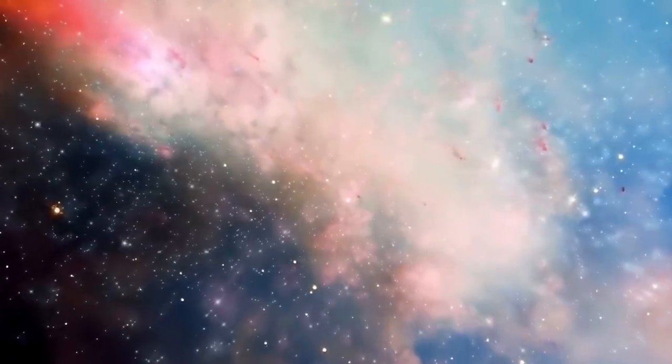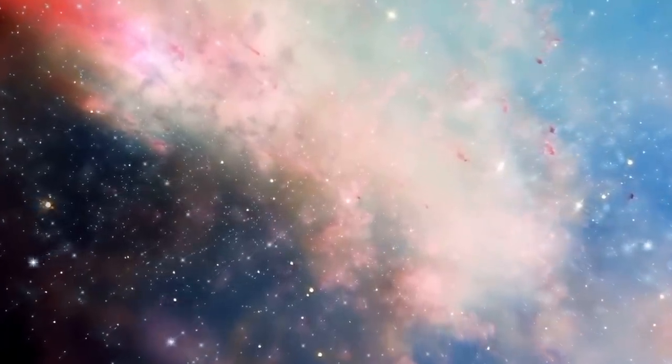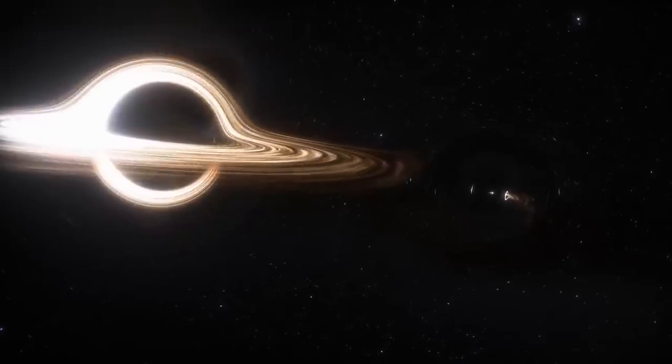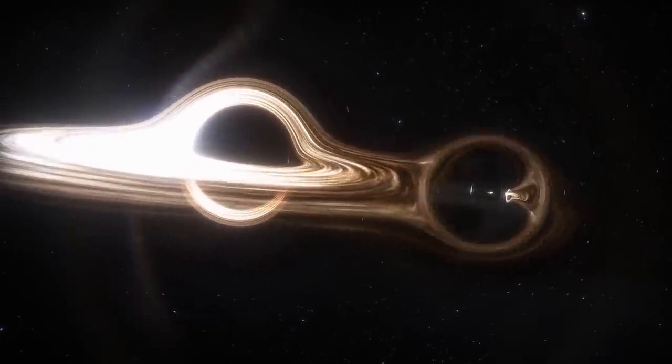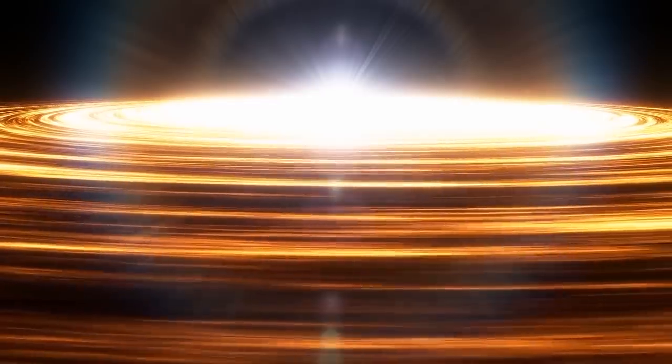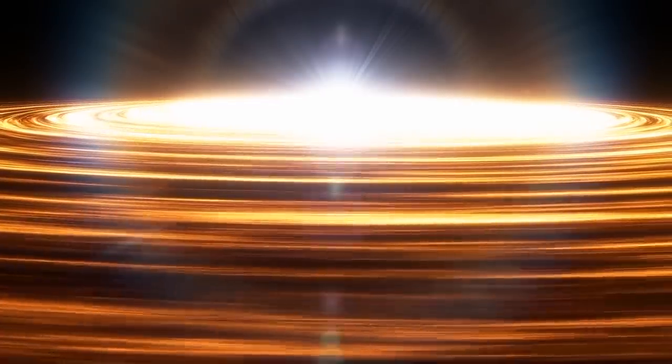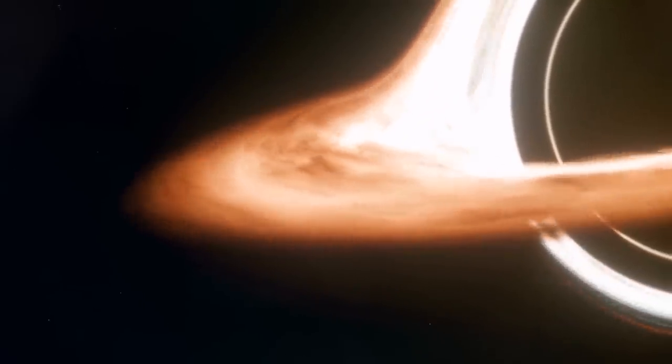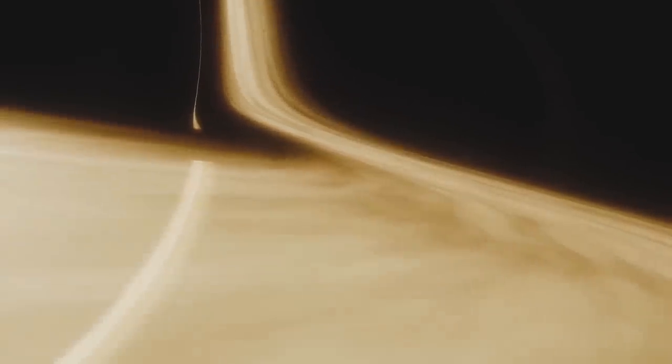But 10 years later, the discovery of Cygnus X1 was followed by the discovery of an object called Sagittarius A-star at the galactic center of the Milky Way. When the math was done, it was concluded that it had to have a mass of over 4 million suns. Such a supermassive black hole is too hefty to have formed from any star.